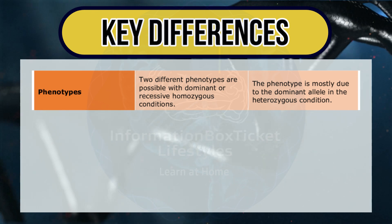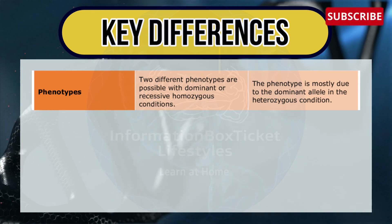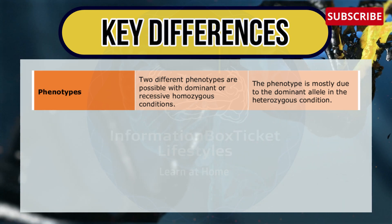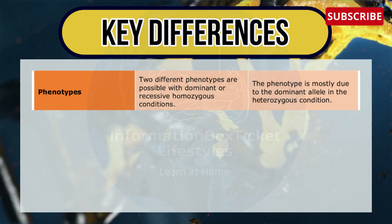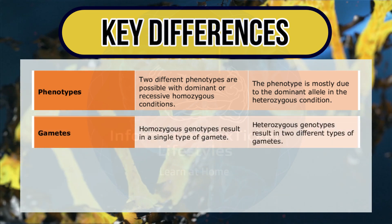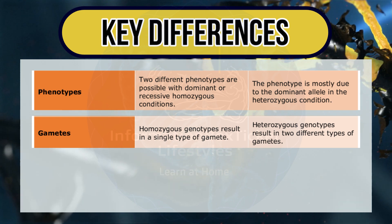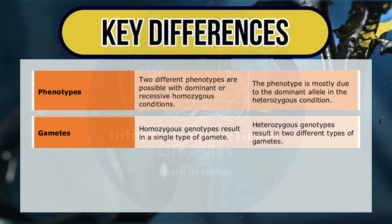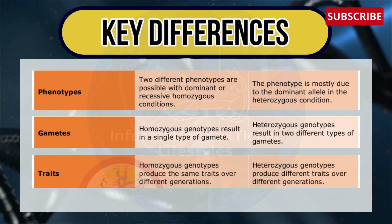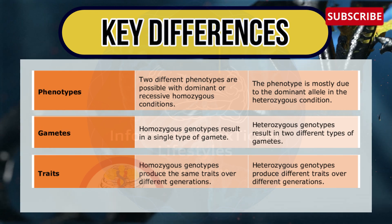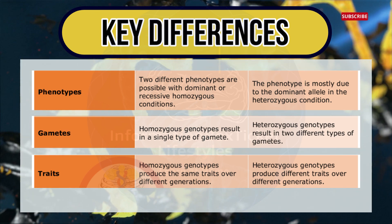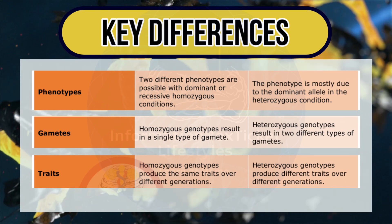Regarding phenotypes, two different phenotypes are possible with dominant or recessive homozygous conditions, whereas in heterozygous the phenotype is mostly due to the dominant alleles. Regarding gametes, homozygous genotypes result in a single type of gamete, whereas heterozygous genotypes result in two different types of gametes. Regarding traits, homozygous genotypes produce the same traits over different generations, whereas heterozygous genotypes produce different traits over different generations.